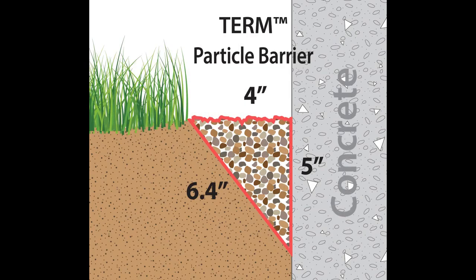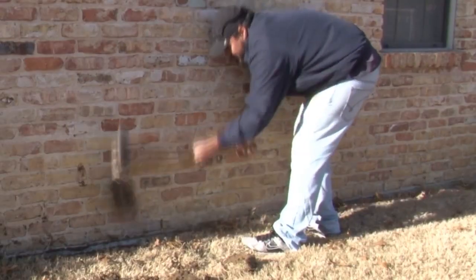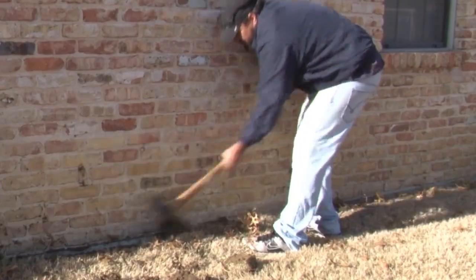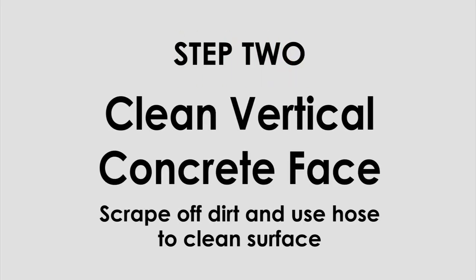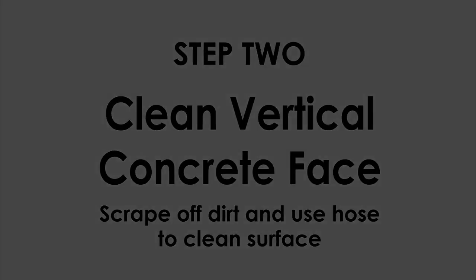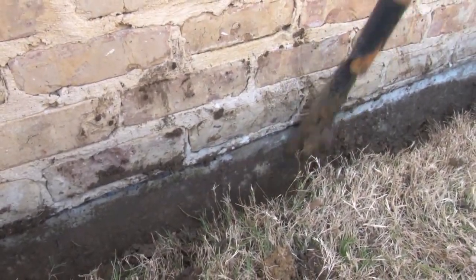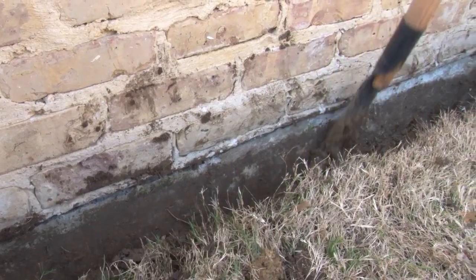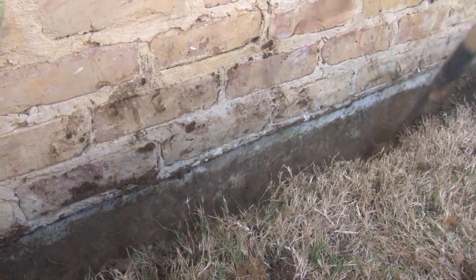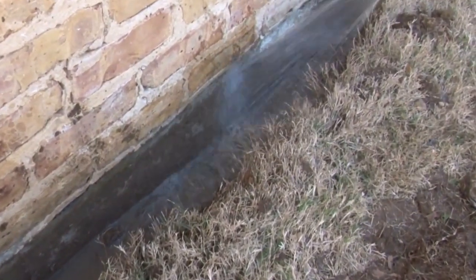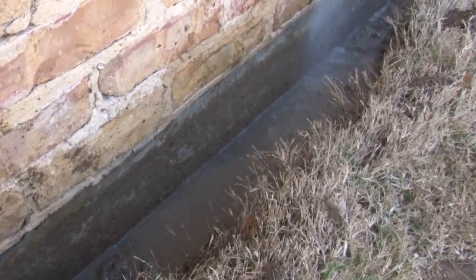The first step is to dig a wedge-shaped trench completely around the exposed perimeter of the building. After digging the trench, it is important to clean the vertical concrete, making certain that there is no mud. The particles must be touching all areas of the wall. If mud or other residue is present, termites can tunnel through that and avoid contact with the particles.